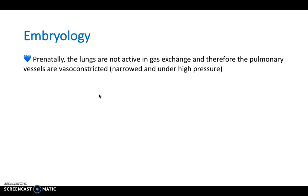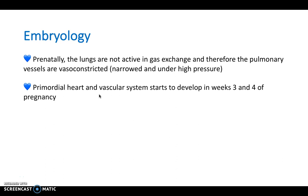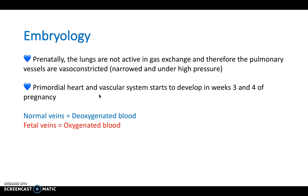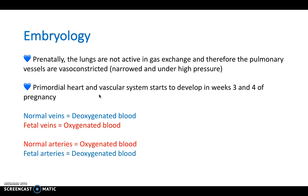One key concept to appreciate is that prenatally the lungs are not active in gas exchange, and therefore the pulmonary vessels are very vasoconstricted — extremely narrow and under significant high pressure. The primordial heart and vascular system starts to develop in the third and fourth week, very early in pregnancy. Note that fetal veins carry oxygenated blood — the opposite of normal adult veins — and fetal arteries carry deoxygenated blood, the opposite of normal adult arteries.